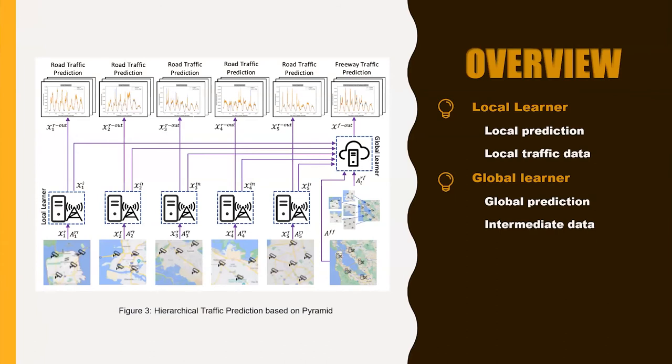Now, I will give you the overview of the pyramid. The pyramid is a DN framework between the edge and the cloud servers. The edge servers train local learners to collect the local raw data, for example, the local traffic data, the local weather data, and generate the local prediction.